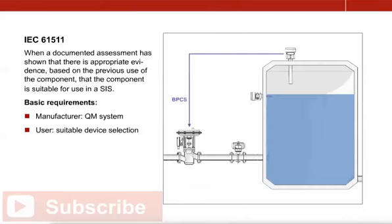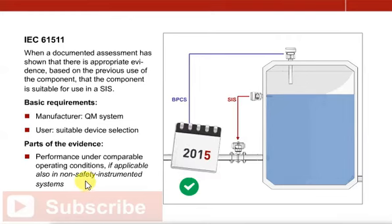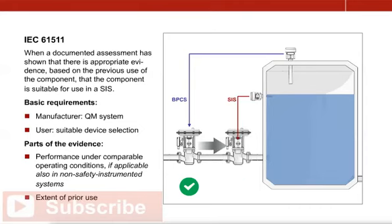Users are responsible for selecting a device that fulfills the fundamental requirements of their specific application. The documented assessment of prior use allows users to draw a device's suitability for use in safety instrumented systems under comparable operating conditions. As field units used in non-safety instrumented systems basically fulfill the same function, the experience gathered in these applications can be applied as well. If prior use of a device has reached a certain extent, and the device has shown a satisfactory performance, the user usually adds it to a list of standard devices. As part of an ongoing updating process, devices with an insufficient performance are removed from this list again.